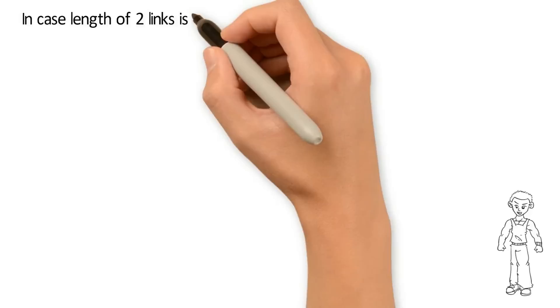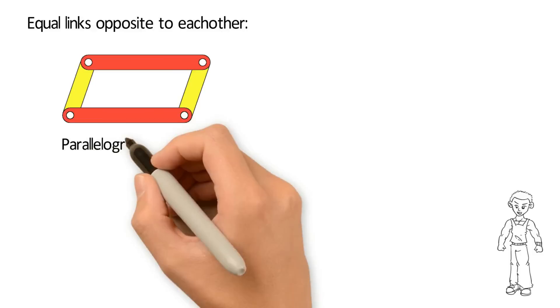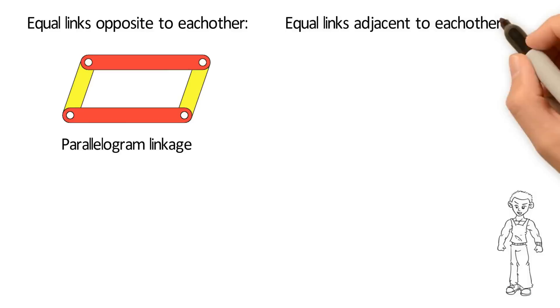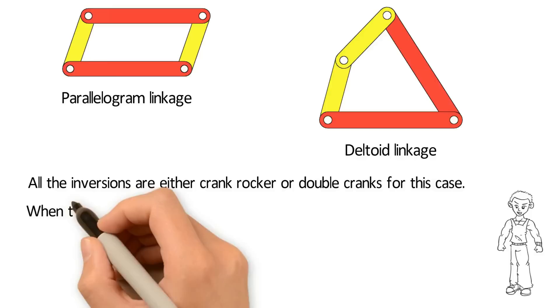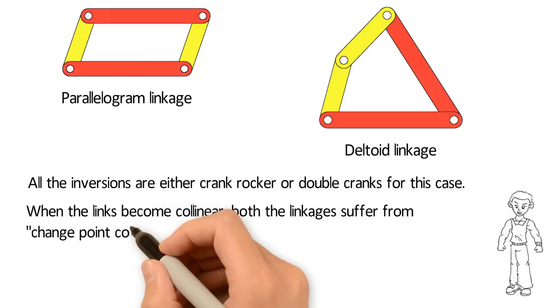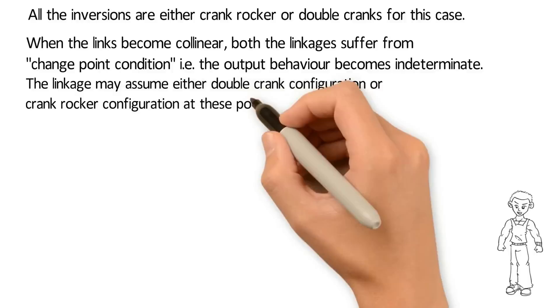In the case where the length of two links is the same — for example P equals S equals 1 unit and L equals 4 units — then to balance the equation, Q has to be equal to L, that is 4 units. So we have two pairs of equal length. Links can be joined in two ways: equal links opposite to each other gives a parallelogram linkage, and equal links adjacent to each other gives a deltoid linkage. All inversions are either crank rocker or double crank for this case. When the links become collinear, both linkages suffer from the change point condition, where the output behavior becomes indeterminate.